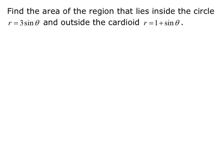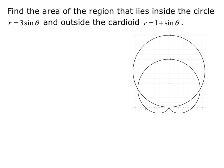Our example asks us to find the area of the region that lies inside the circle r equals 3 sine theta and outside the cardioid r equals 1 plus sine theta. The first thing I want to do is graph the two equations so that I have a visual of what I'm trying to do.